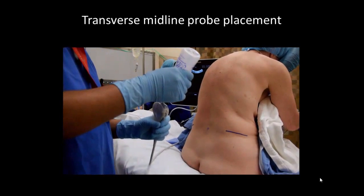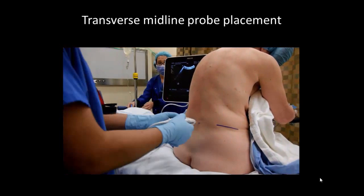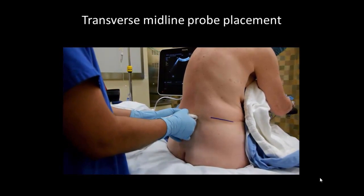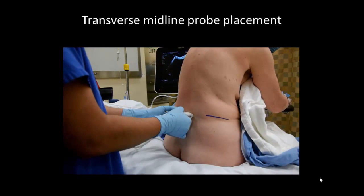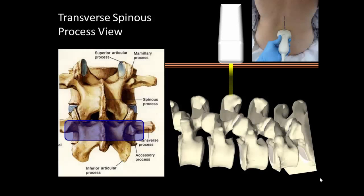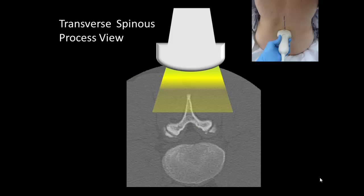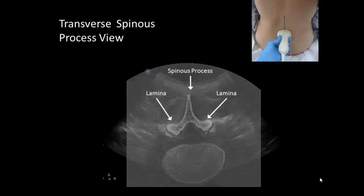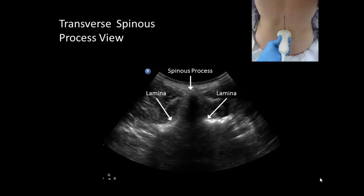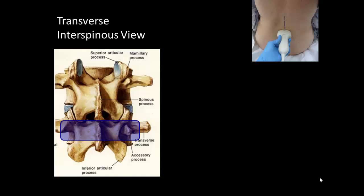The probe is placed on the patient's back in a transverse orientation over the midline, and slid in a cephalad or caudad direction. There are two possible views that may be obtained. The first is the spinous process view, in which the probe and beam are directly over a spinous process. If the probe is placed over a spinous process, the spinous process and the adjacent laminae are recognizable by the dense acoustic shadow that they cast on ultrasound. The second view is the interspinous view, which is obtained by sliding the probe either cephalad or caudad to bring the beam into the interspinous and interlaminar space.